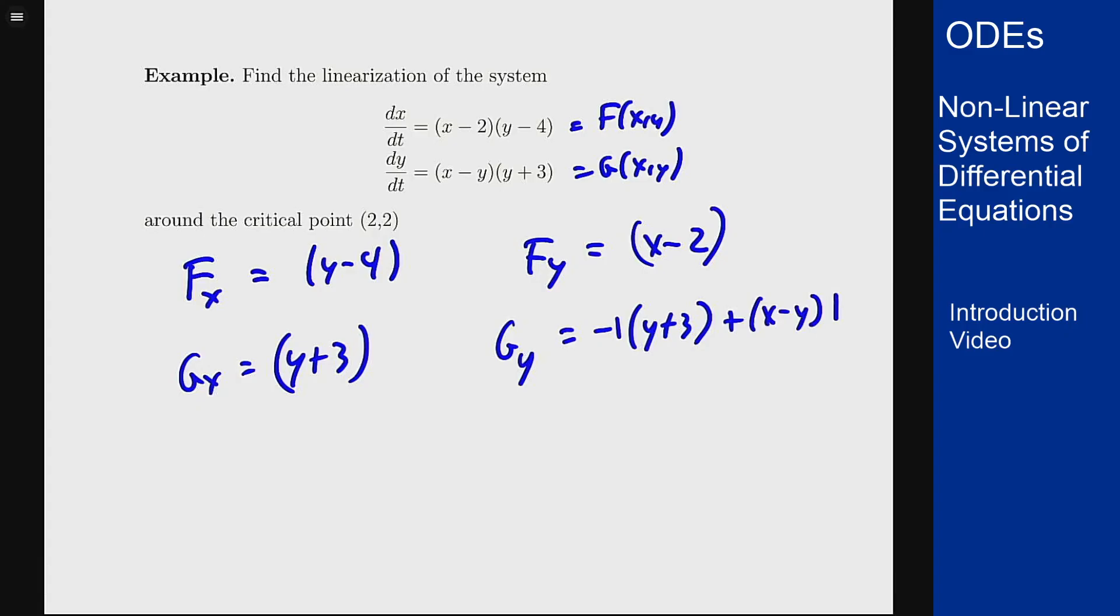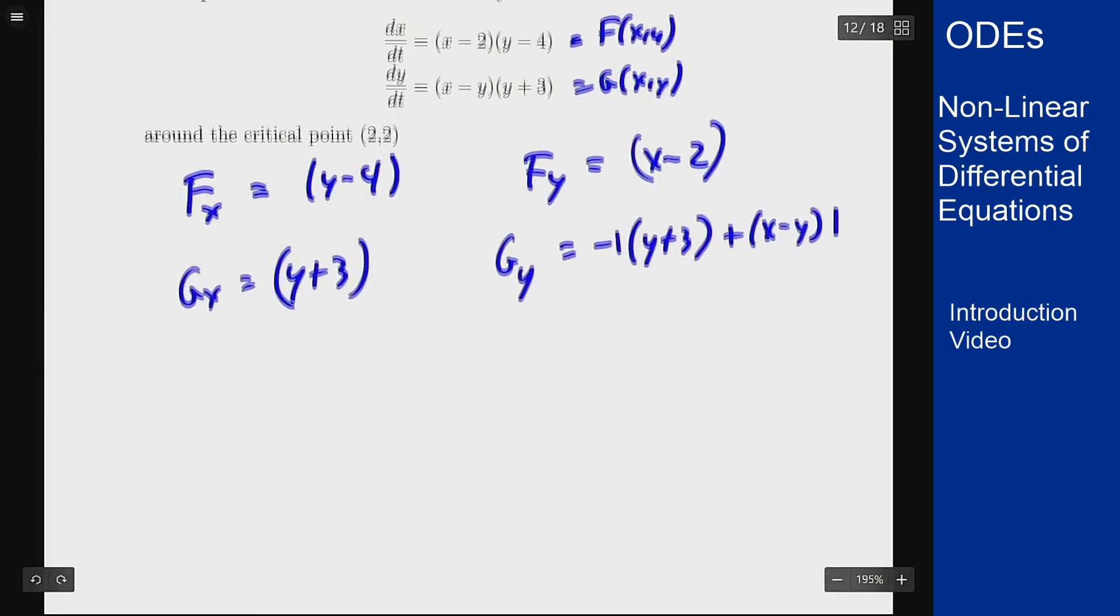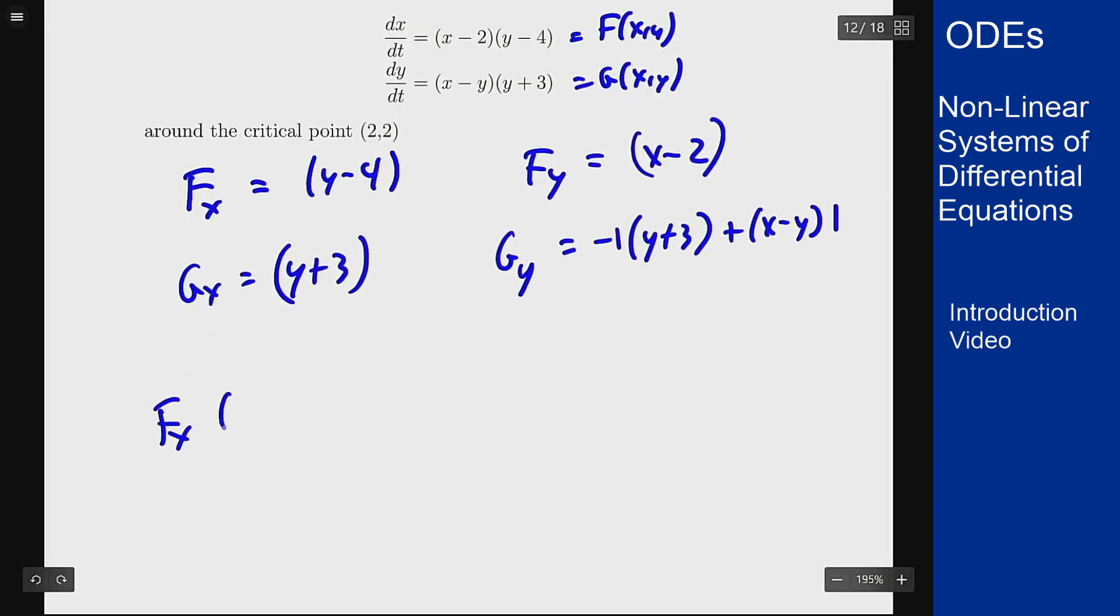Now to find the linearization, I plug in my equilibrium solution (2,2) into all of these functions. fₓ(2,2) = 2-4 = -2. f_y(2,2) = 2-2 = 0. gₓ(2,2) = 2+3 = 5. And g_y(2,2) = -5+0.